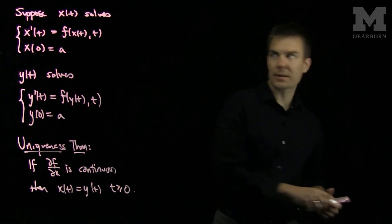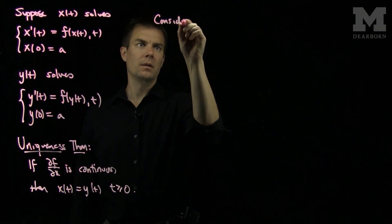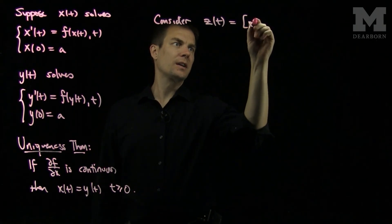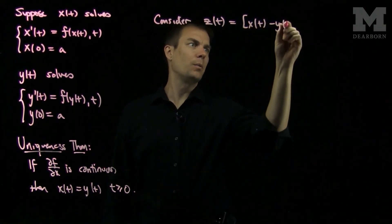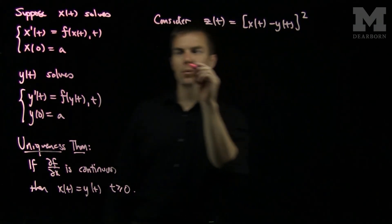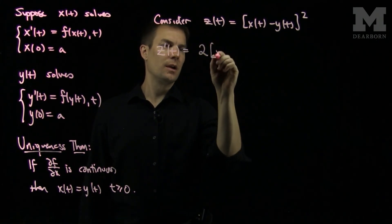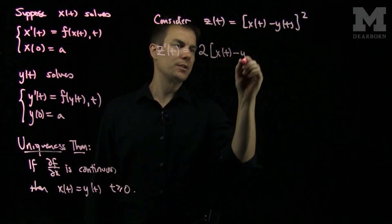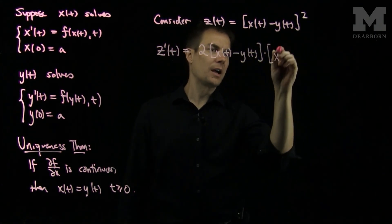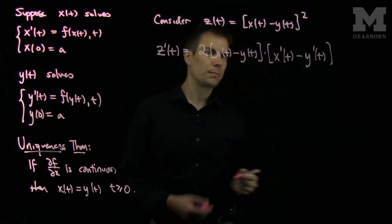And here's how we go about proving that. Let's consider z of t, which is x of t minus y of t quantity squared. Then z prime of t is 2x of t minus y of t times x prime of t minus y prime of t by the chain rule.